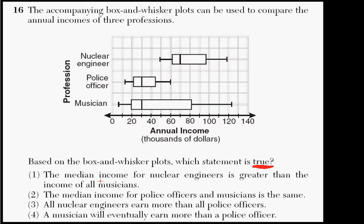So the first choice says the median income for nuclear engineers is greater than the income of all musicians. The second one says the median income for police officers and musicians is the same. Third says all nuclear engineers earn more than all police officers. The fourth says a musician will eventually earn more than a police officer.